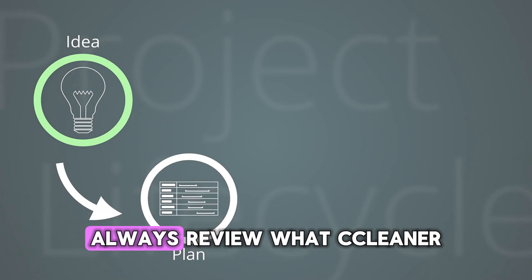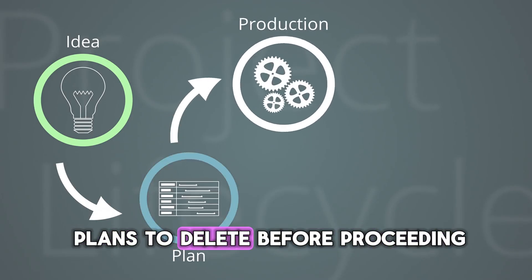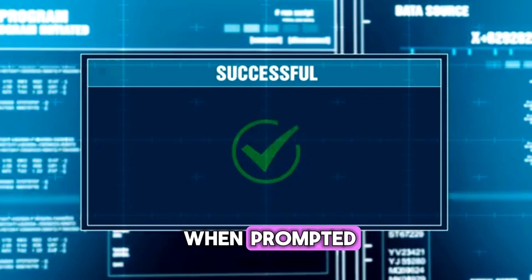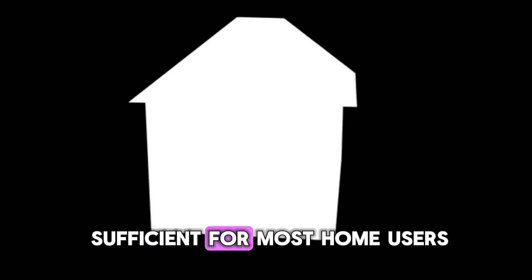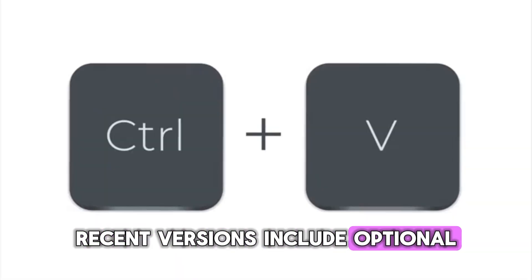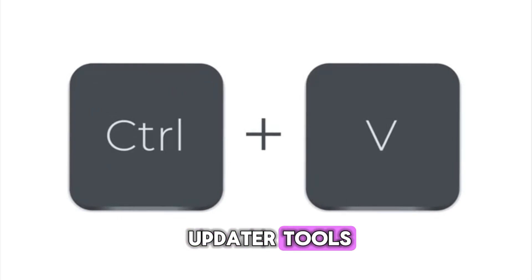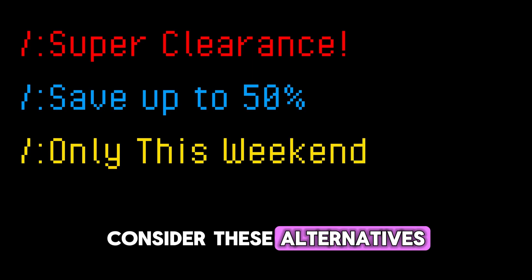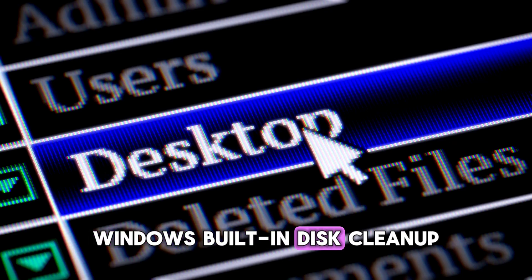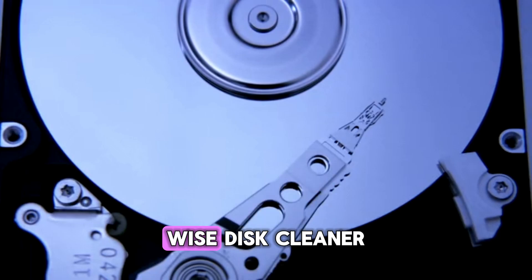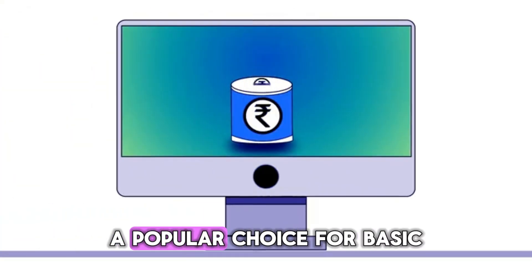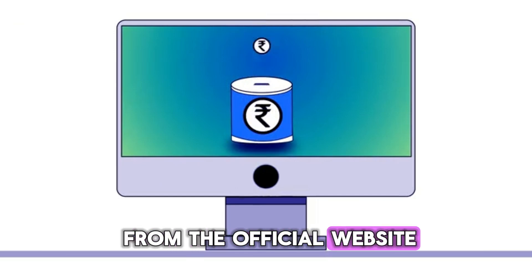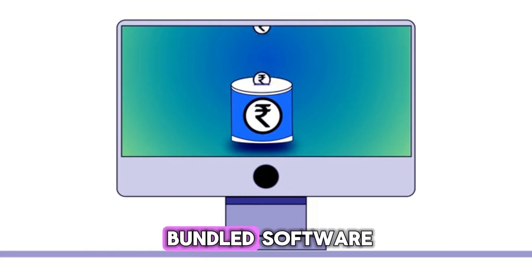Safety considerations: always review what CCleaner plans to delete before proceeding. Be cautious with registry cleaning and create backups when prompted. The free version is sufficient for most home users. Recent versions include optional performance optimizer and driver updater tools. If you prefer not to use CCleaner, consider these alternatives: BleachBit, Windows built-in Disk Cleanup, Glary Utilities, or Wise Disk Cleaner. CCleaner remains a popular choice for basic PC maintenance, but always download it from the official website to avoid potentially unwanted bundled software.